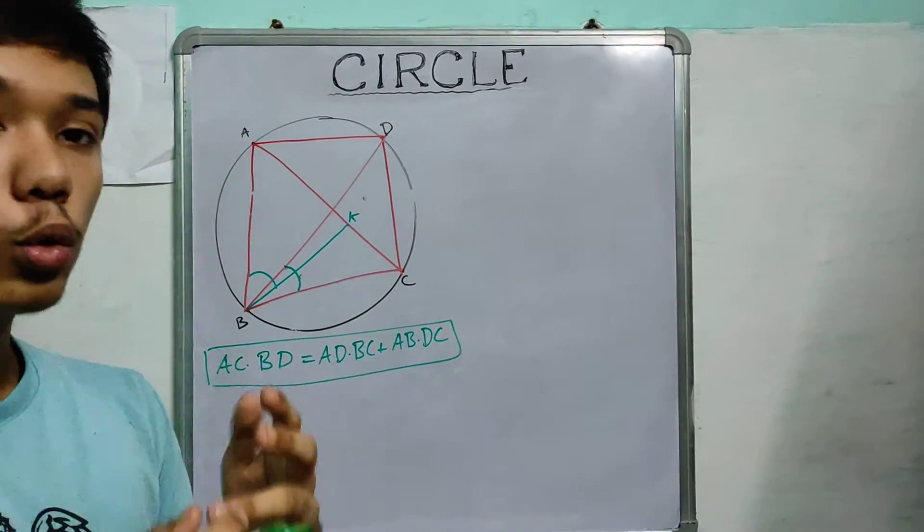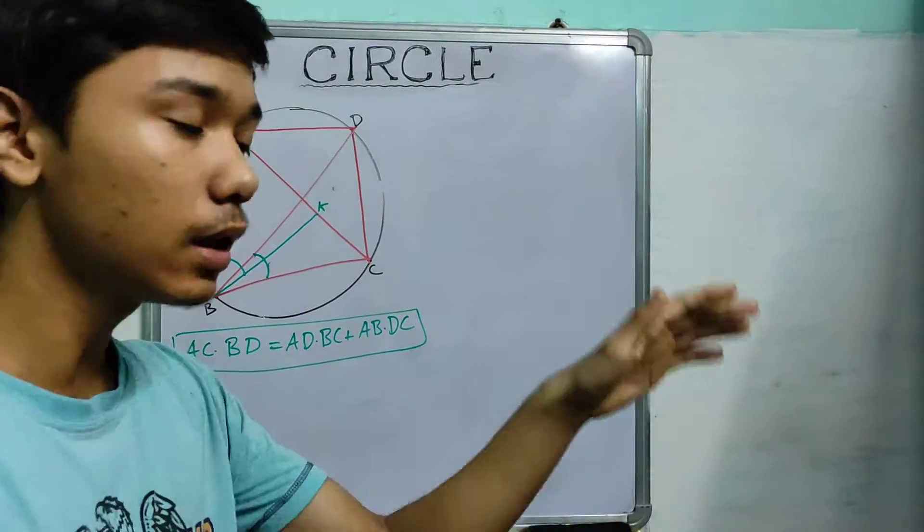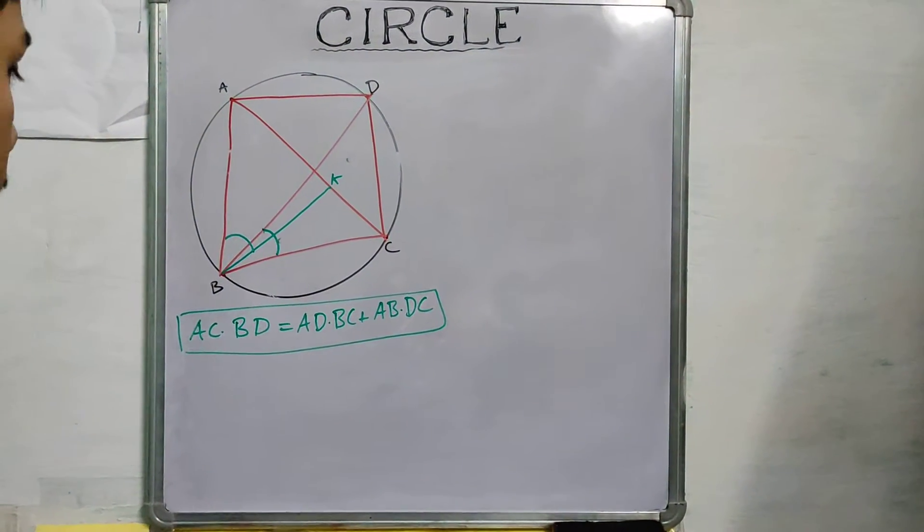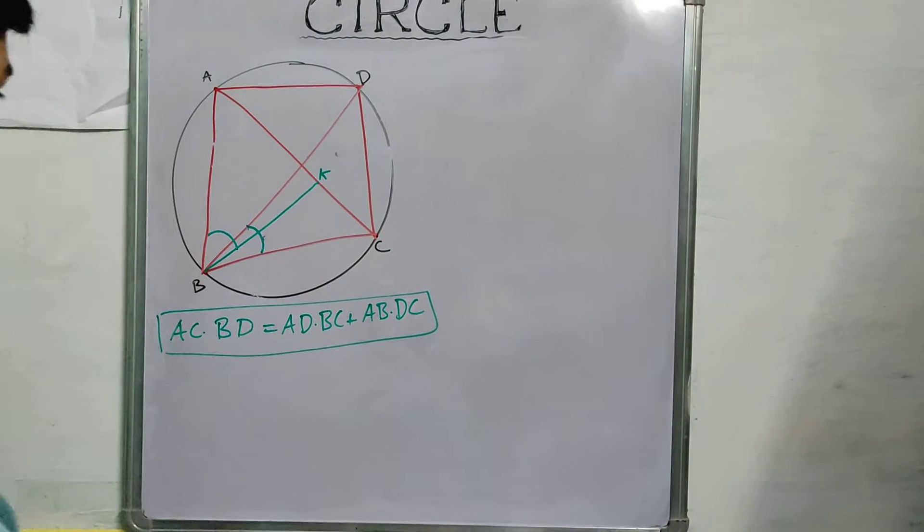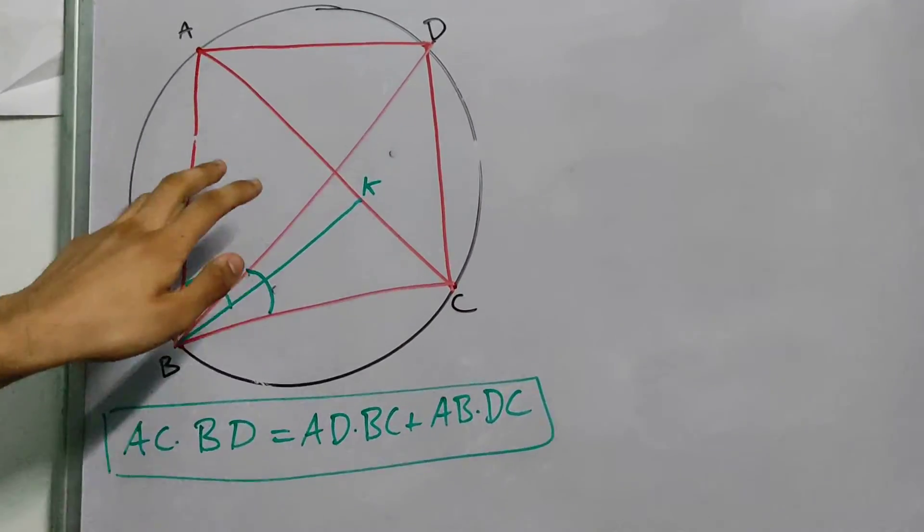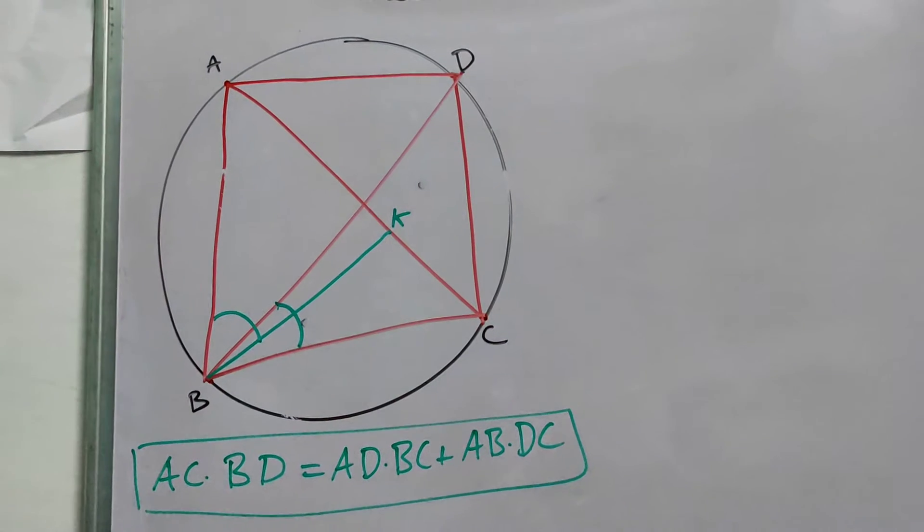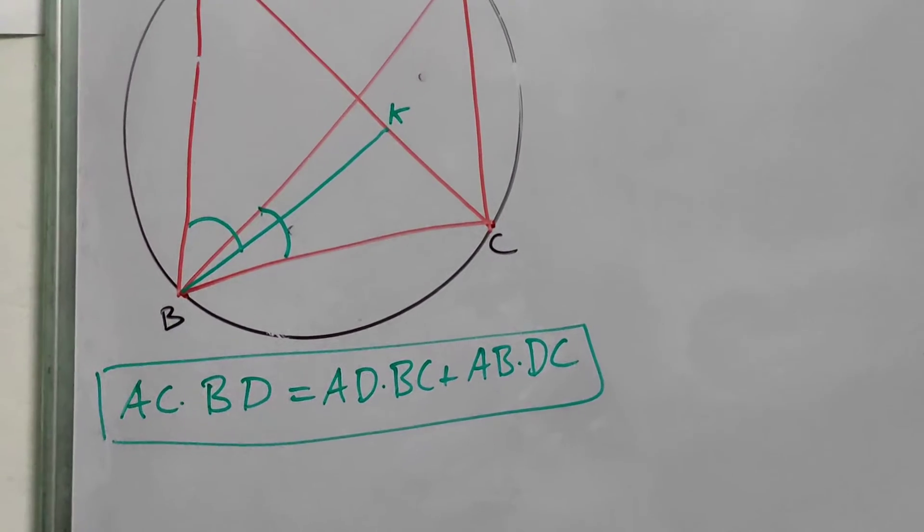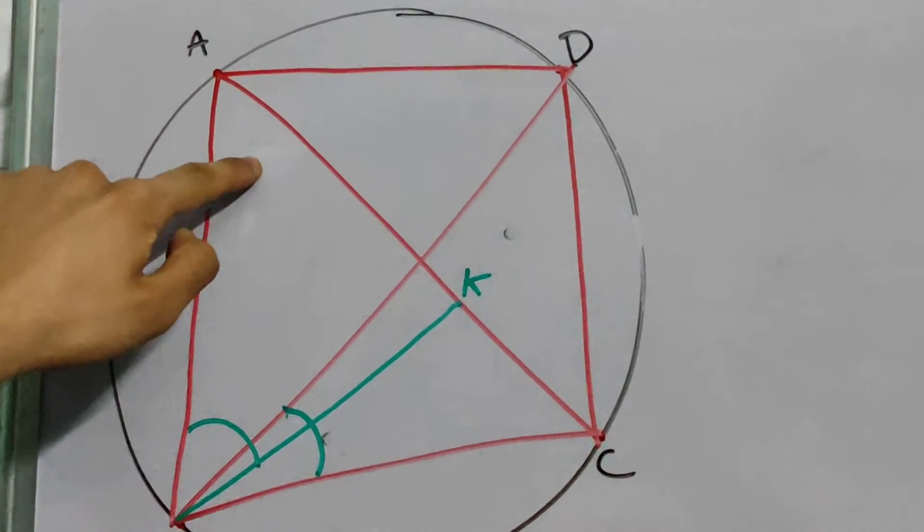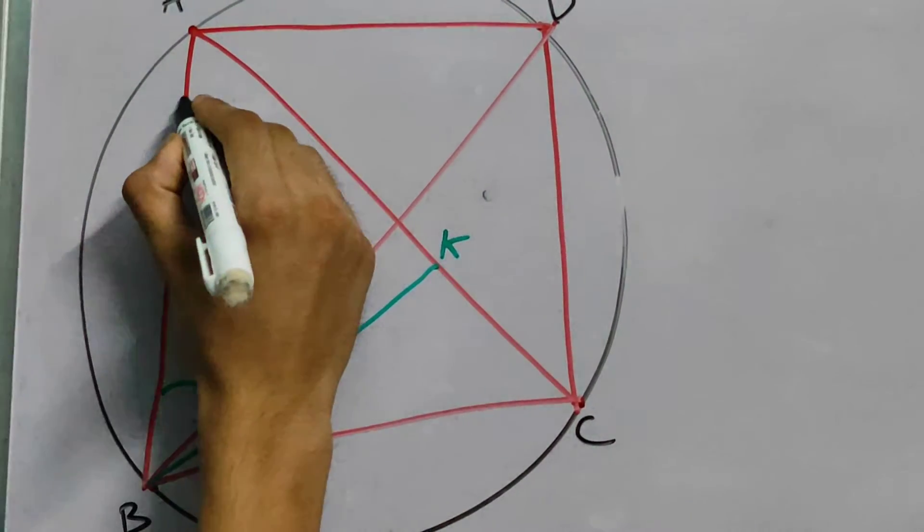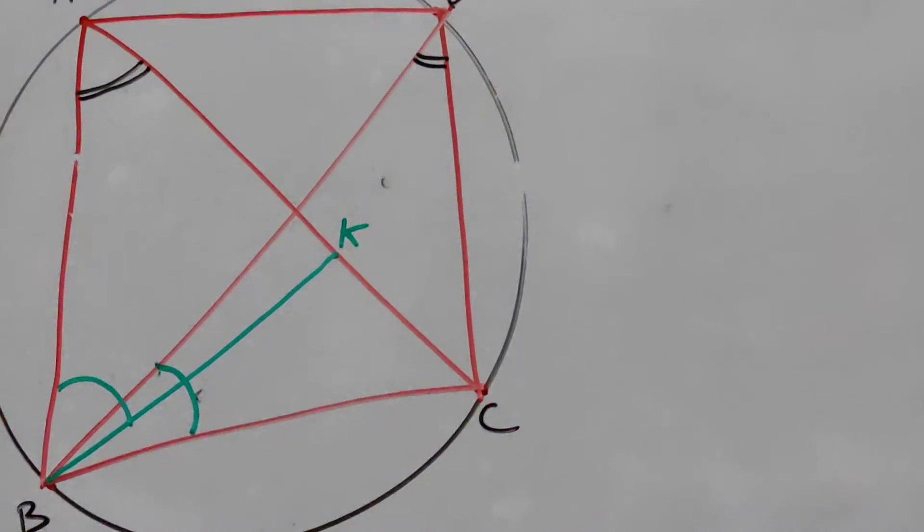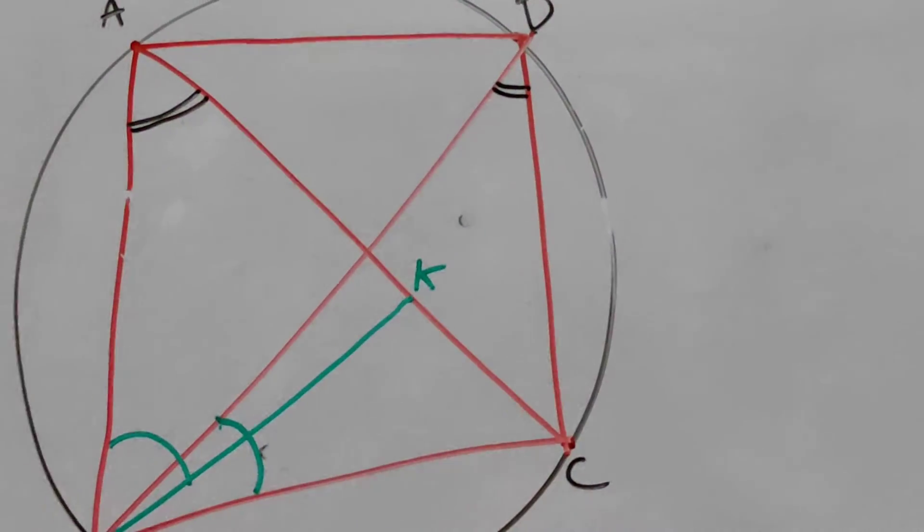And what we will do is, we will find two pairs of similar triangles, then we will work out the ratio of the sides, and finally we will arrive at what we want. Now I need you to notice something. Which two triangles can be considered similar. So if you think about it, this angle will be equal to this one right over here. This is the cyclic quadrilateral, and these two angles are equal in a cyclic quadrilateral.